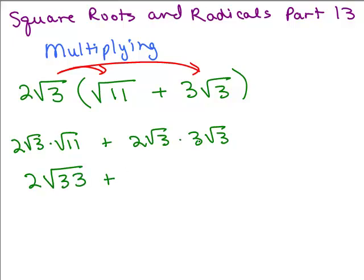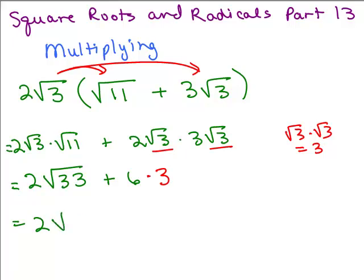For the second one on the outside I have 2 times 3 which is 6. Now let's analyze the radicals here. I have square root of 3 times square root of 3. You could write square root of 9 and then say the square root of 9 is 3, or you might recognize right off the bat that square root of 3 times square root of 3 means you're just multiplying by 3. So you end up with 6 times 3, because square root of 3 times square root of 3 is 3. That gives me 2 square roots of 33 plus 18.